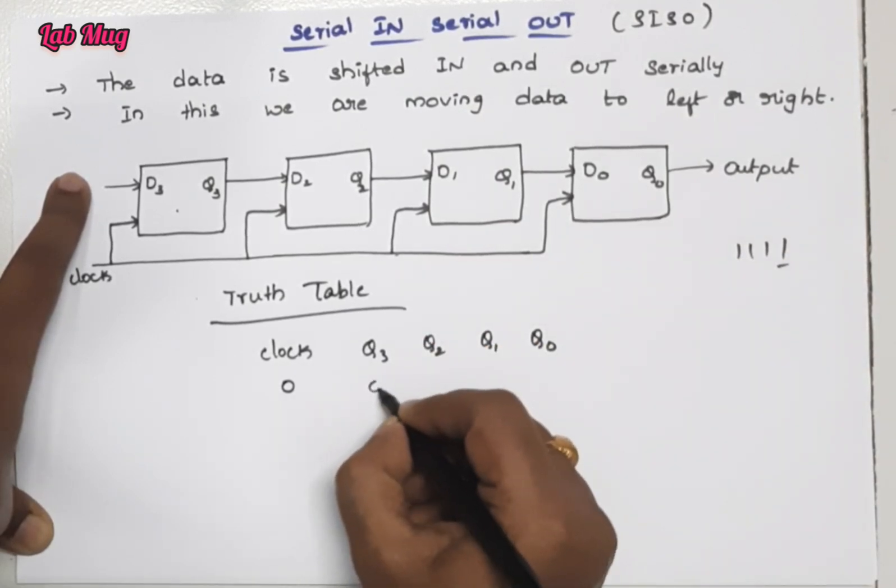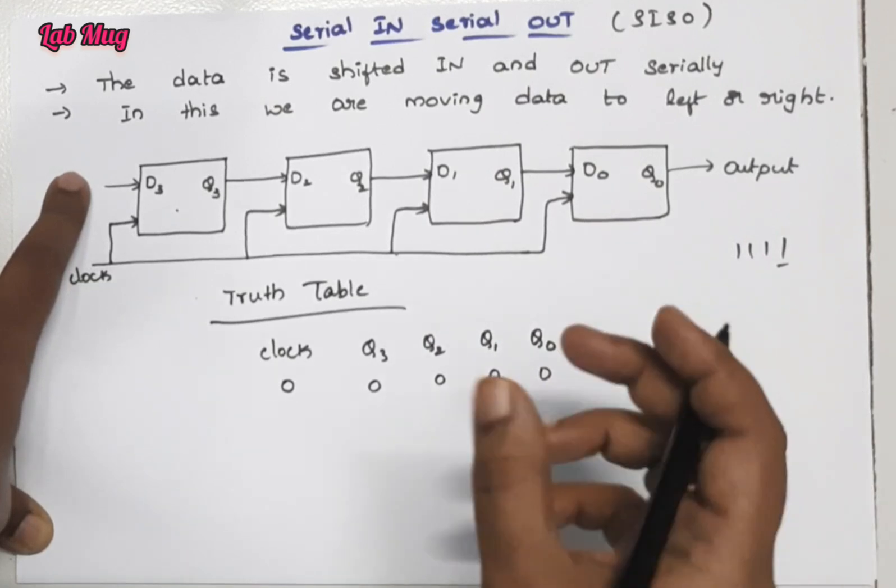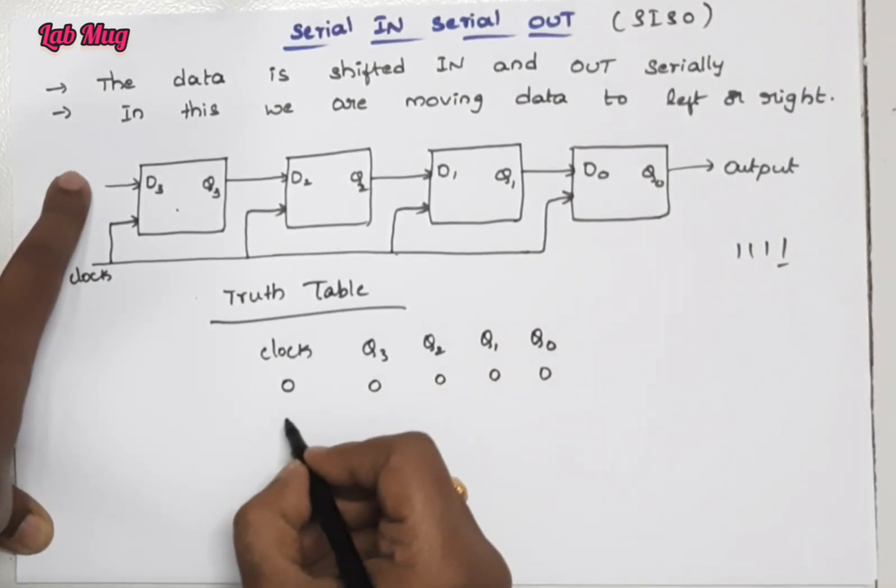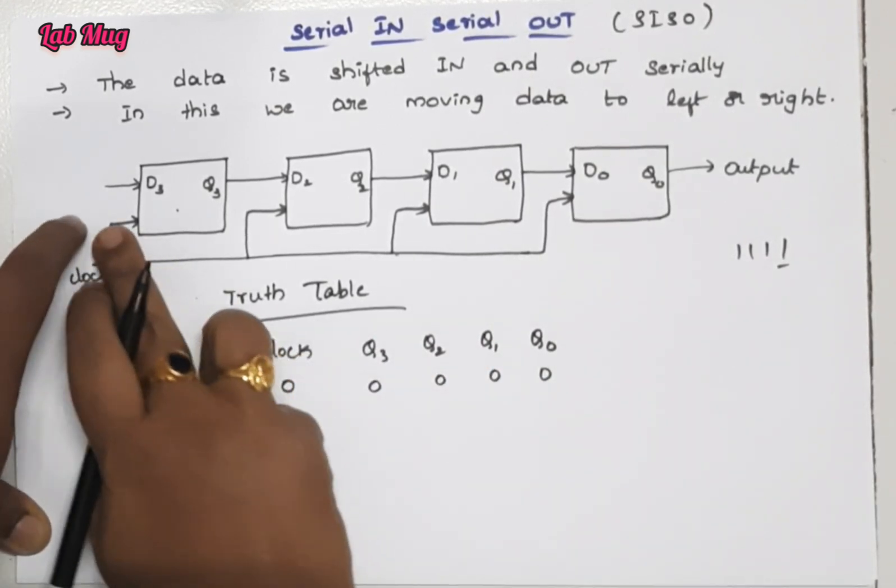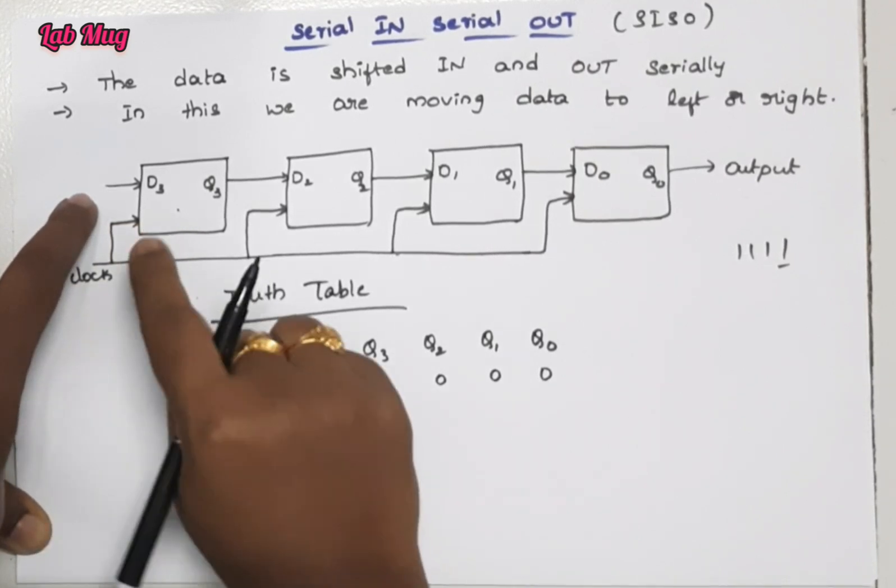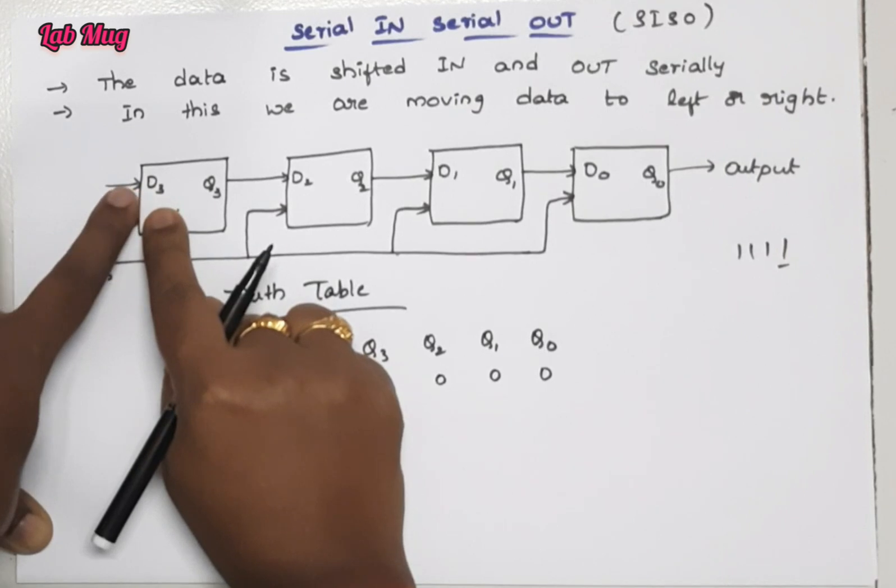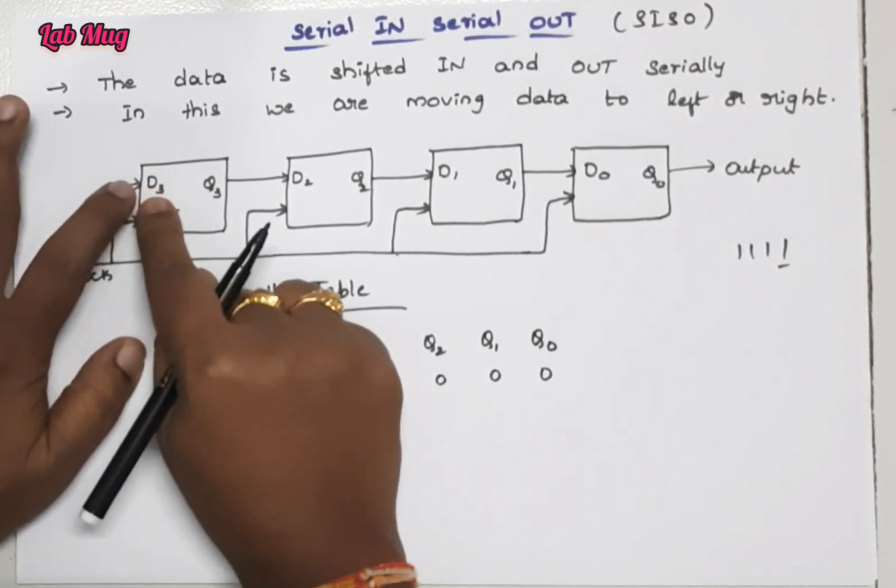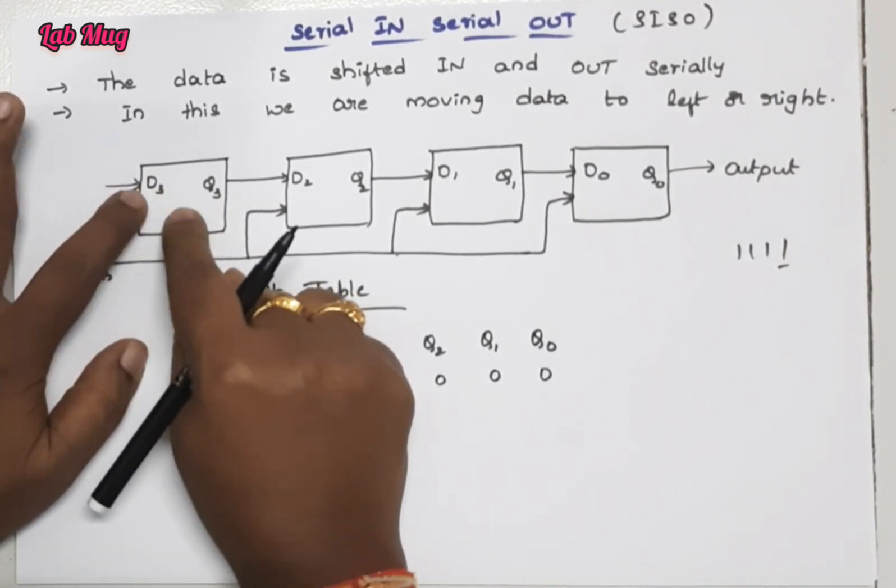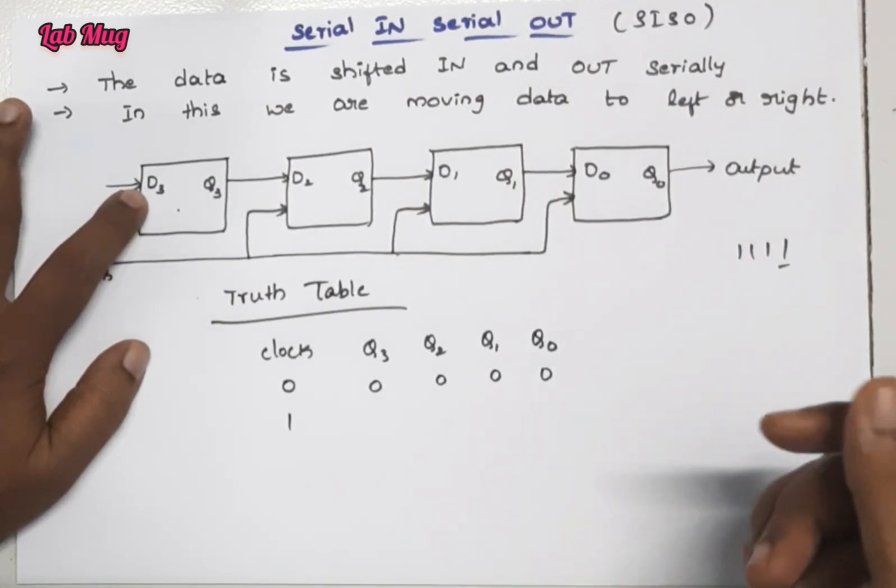First we need to turn the clock on, then turn it off. So the initial values are zero zero zero zero. Whenever the clock value is one, then it activates and passes through.